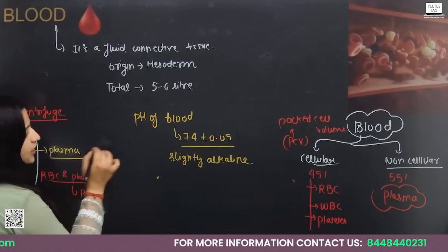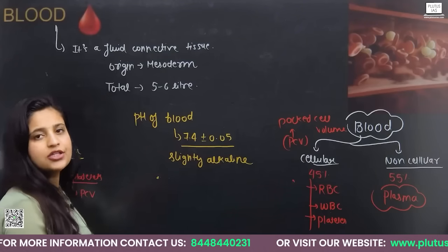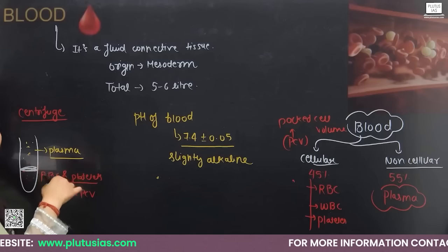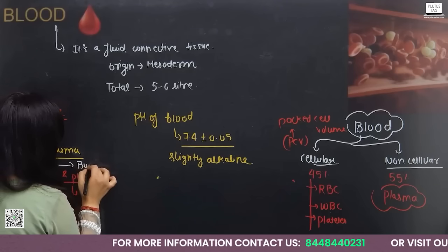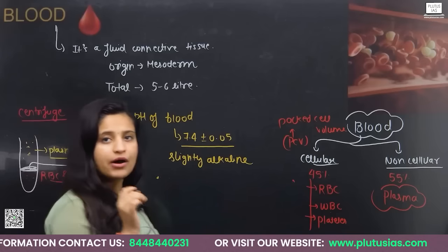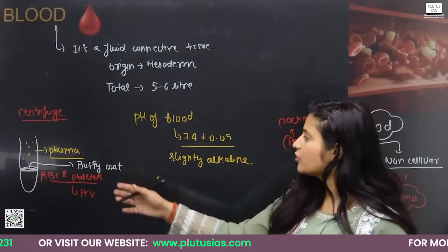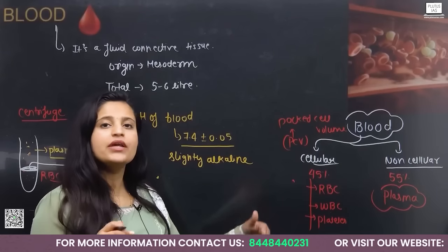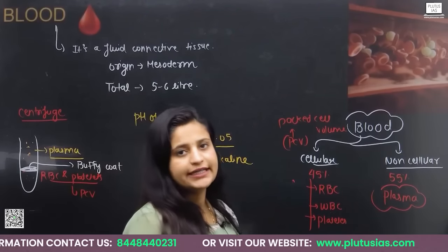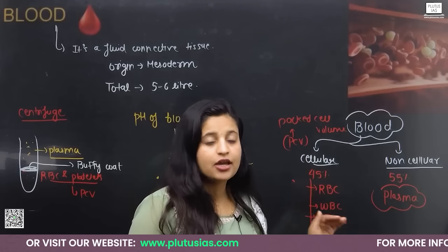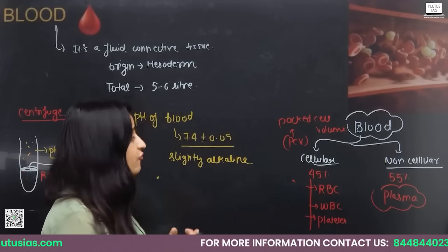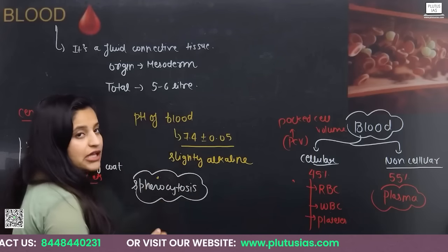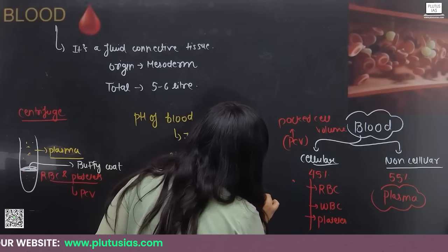The plasma floats on the surface. The packed cell volume is determined by RBC and platelets, and is normally 45%. This PCV value is also affected in some medical conditions. For example, in spherocytosis — where RBCs become more spherical instead of biconcave — they occupy maximum area, which increases the packed cell volume.